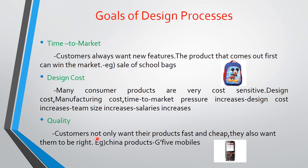Quality — customers not only want their products fast and cheap, they also want them to be right. For example, China products — you may have heard about G5 mobiles. When they came into the market, they reached each and every person. But as the quality was poor, now they are no longer in the market.